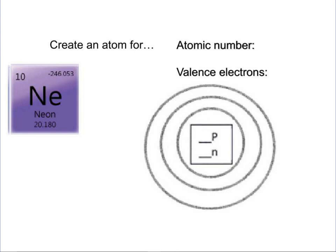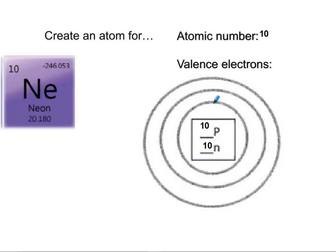Now we're creating an atom for neon. Neon's atomic number is ten, so it has ten protons and ten neutrons. You have two electrons in the first energy level, and then you can put up to eight on the outside. So I want a total of ten — two plus eight is ten. The number of valence electrons in the last energy level is eight.